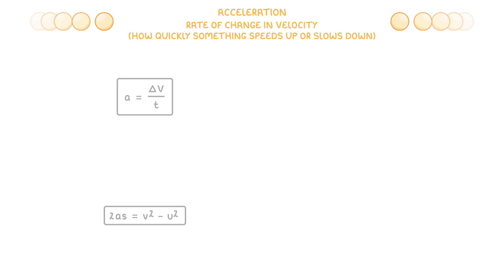There are two important equations to know for acceleration, but we're going to start with this top one. On the left, we have acceleration, which is measured in meters per second squared. Then in the bottom right, we have time, and in the top right, we have the change in velocity.